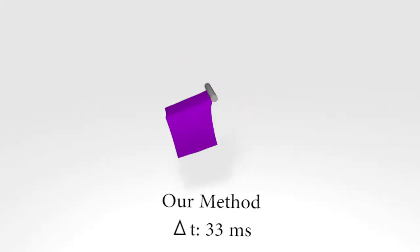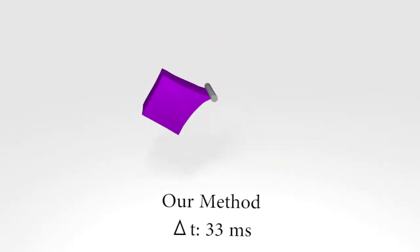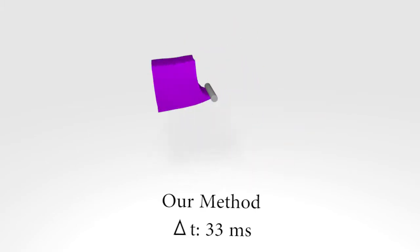We propose an energy tracking method that blends implicit midpoint with forward or backward Euler. Our method is stable, but produces vivid motion without noticeable damping.